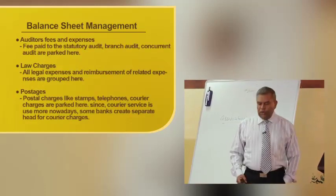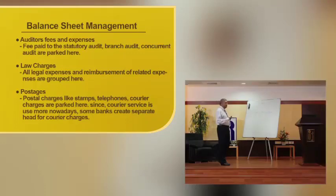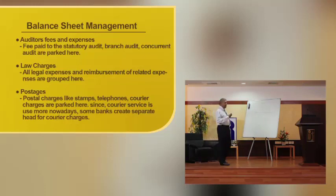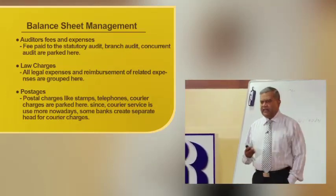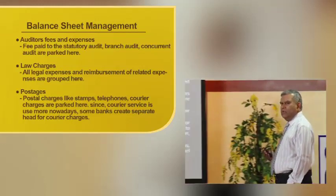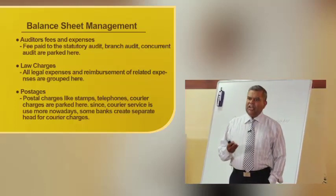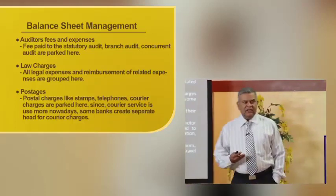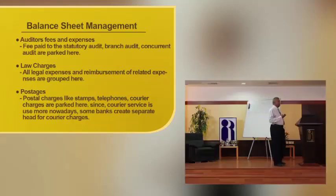Next is audit fees and expenses. Nowadays every branch undergoes various forms of audit — it can be a statutory audit, concurrent audit, or stock audit, or regular inspection. For specialized branches, there are always concurrent auditors attached; fees paid to statutory auditors, garage auditors, and concurrent auditors are all debited here. Then comes legal charges — every bank has its own panel of lawyers; they give opinions on documents and mortgages, and fees for all these certificates are paid and charged to the head of legal charges.